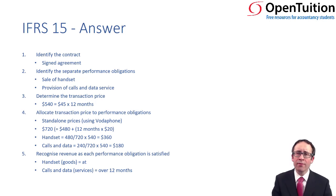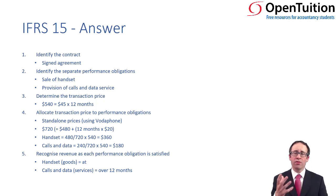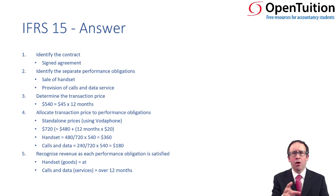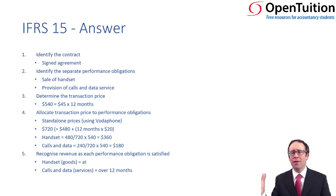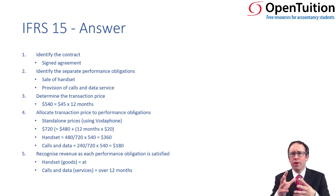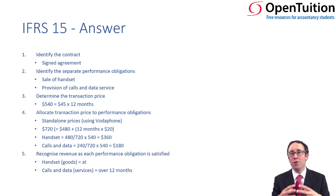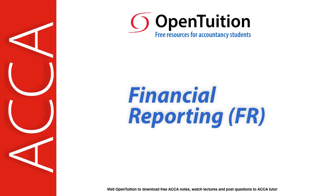What I recommend you do now: we have a couple of examples to follow. Before you attempt those, go into the study text of your chosen tuition provider, read through what they've written, and have a go at the examples within there for additional practice. Then have a go at the examples provided here. Once you've done that, you should find yourself more comfortable with the different types of transactions you can expect in an exam, and better at understanding the five-step revenue recognition process.